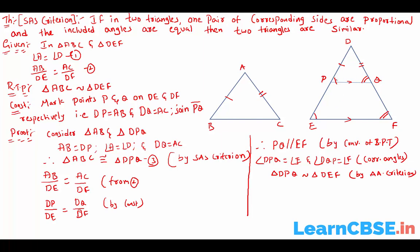From equation 3, in the place of DPQ I can write ABC, because both triangles are congruent. Therefore triangle ABC is similar to triangle DEF. Hence proved.